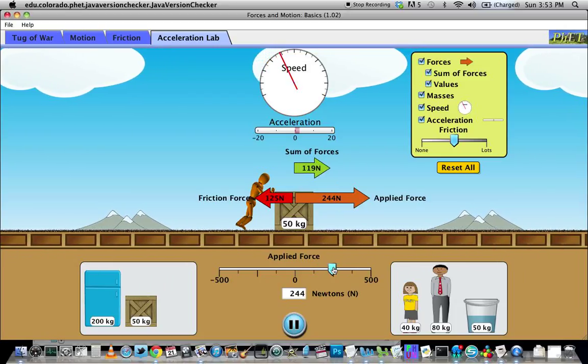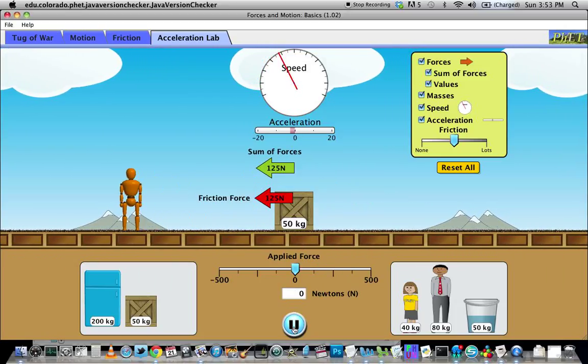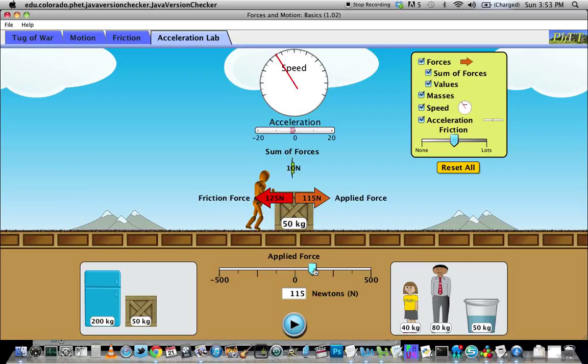And then above both of these, there's a green arrow that changes depending on the situation that's labeled the sum of forces. Now, the sum of forces is what we're calling sigma F, that kind of funny E symbol, F.